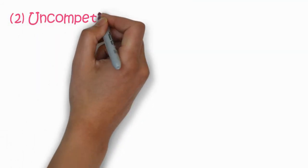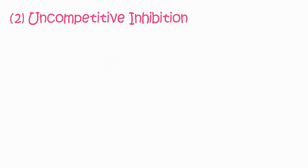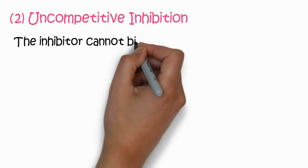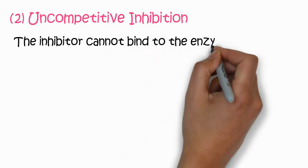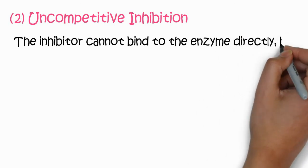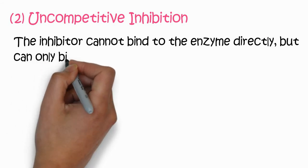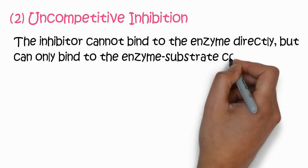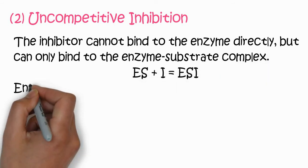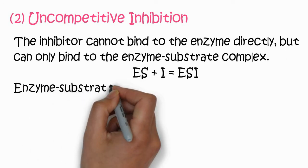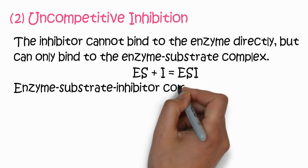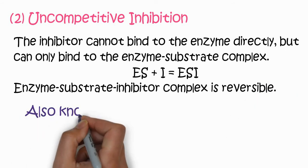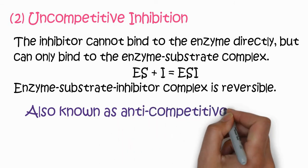The second type is uncompetitive inhibition. In this case the inhibitor cannot bind to the enzyme directly; instead it binds to the enzyme-substrate complex. So it is not competing with the substrate. It forms an enzyme-substrate-inhibitor complex, which is reversible — it can release back the enzyme-substrate complex and the inhibitor.